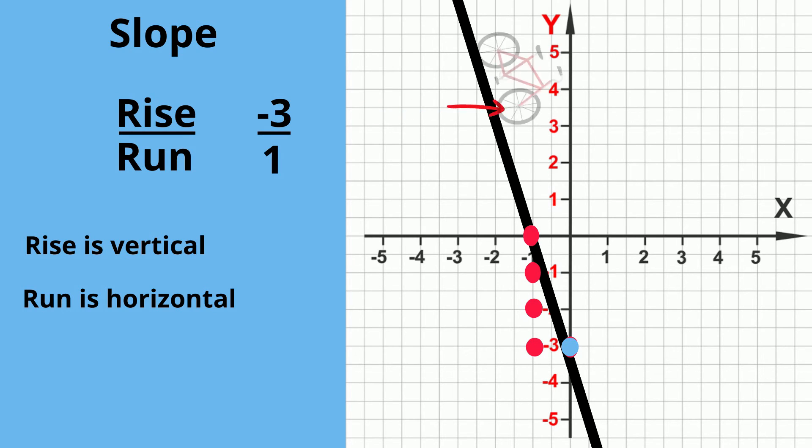Notice that as you move from left to right, the line slopes downward, so the slope is negative. Also notice that the slope is greater than the first line, and you can see that the line is more steep.